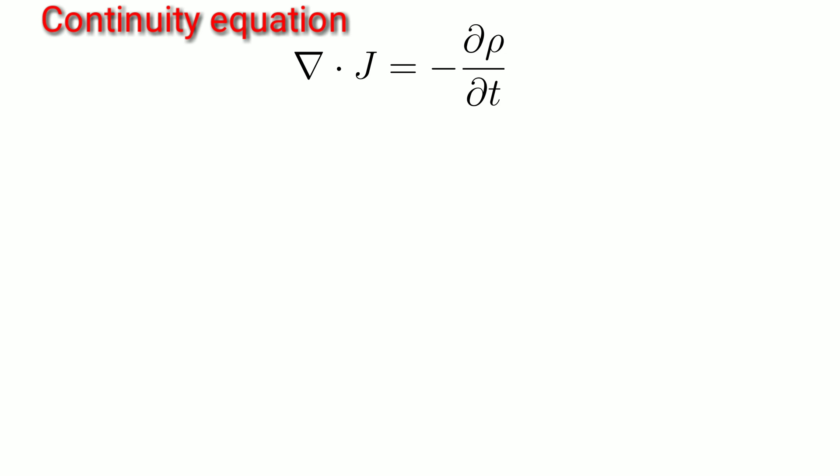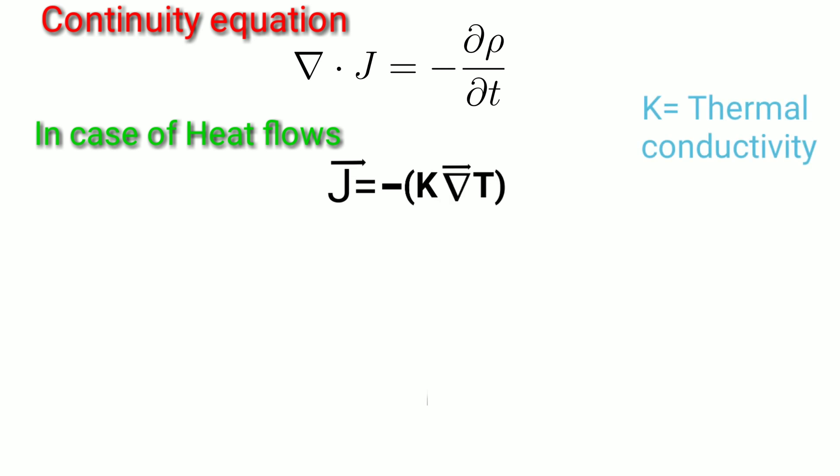In case of heat flows, the heat current j vector is proportional to negative k gradient of T. Now the continuity equation becomes negative del dot k gradient of T equals negative c time derivative of temperature.